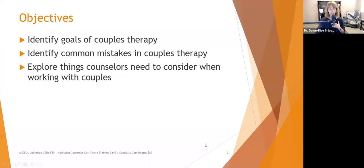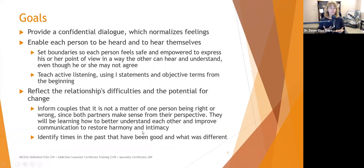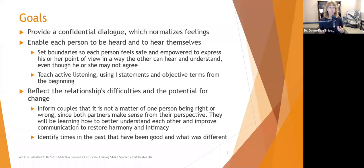One of the first goals of therapy with anybody is to provide a confidential dialogue which normalizes feelings. When you're working with a couple, you may have two people that feel very differently about a particular situation — maybe their finances, how the relationship's going, or sex. We want to allow them to express themselves and normalize their feelings so they're not feeling like one person's wrong and one person's right. From their phenomenological reality, they're both right from their own perspectives. We want to enable each person to be heard, which is generally a challenge initially, because by the time couples come to therapy, they've already sort of tuned each other out.